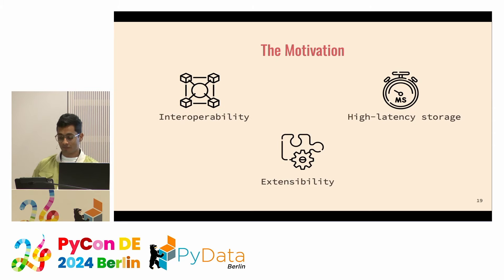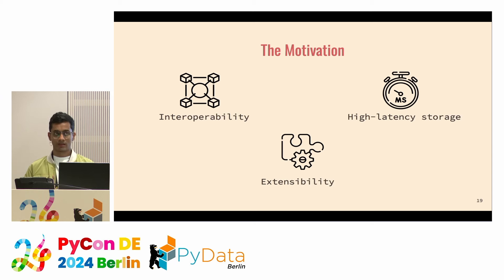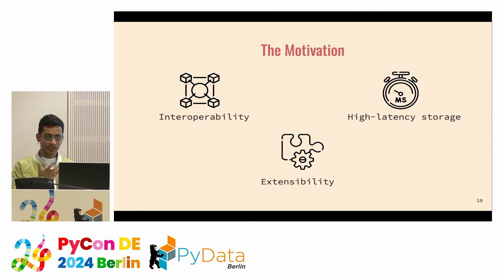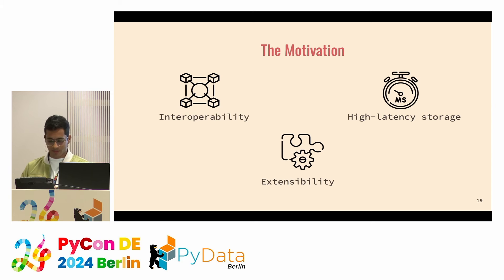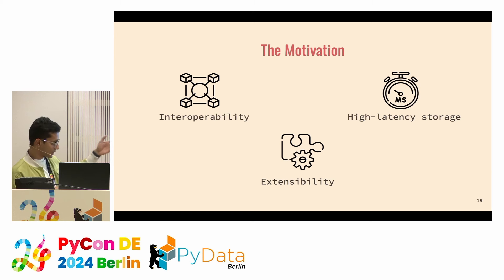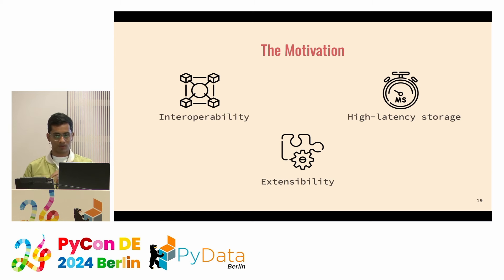The last part is extensibility, which is really exciting. Over the years, Zarr has gained traction in various domains like genomics, geospatial, data science, bioimaging, and nuclear. People in these domains use Zarr heavily and have various feature requests. The v2 specification had no mechanism to add new features, so we started working on a new concept called the extension mechanism, which allows you to add new features to Zarr without touching the core specification. This is one of the most exciting parts of the v3 specification.